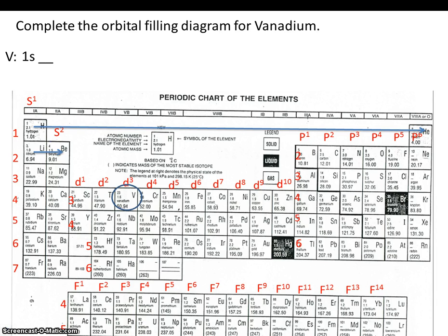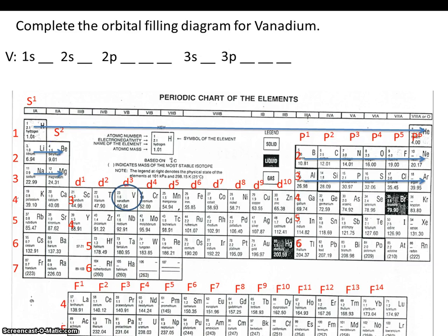The next electrons are located in the second energy level in the S sublevel. Then vanadium's next electrons are located in the second energy level in the P sublevel, and so on. So we just went through 1s, 2s, 2p. Now we'll look at 3s, then 3p, then 4s, and finally 3d.